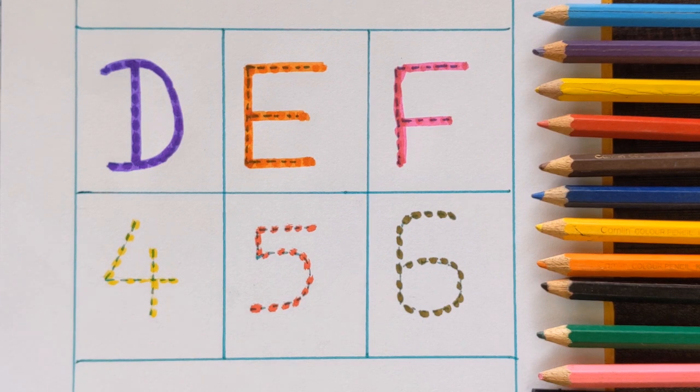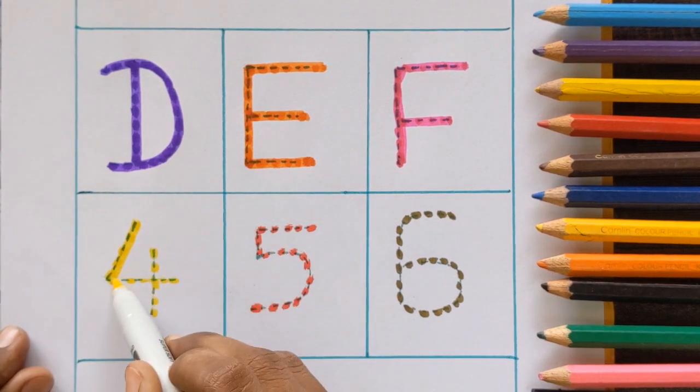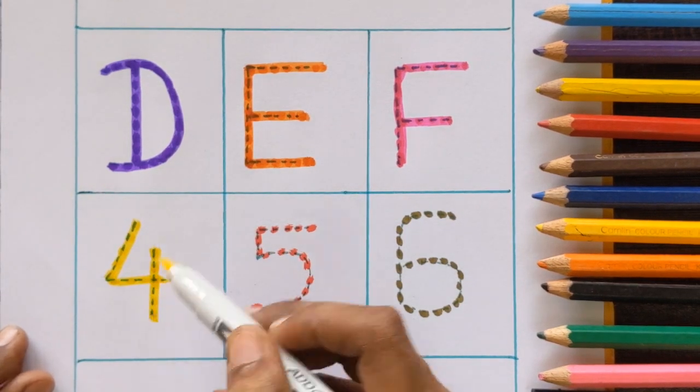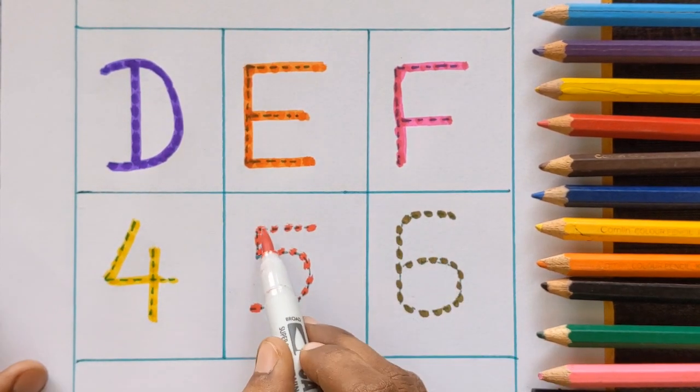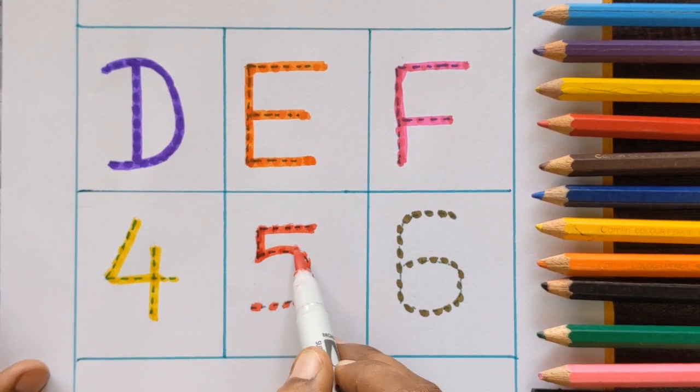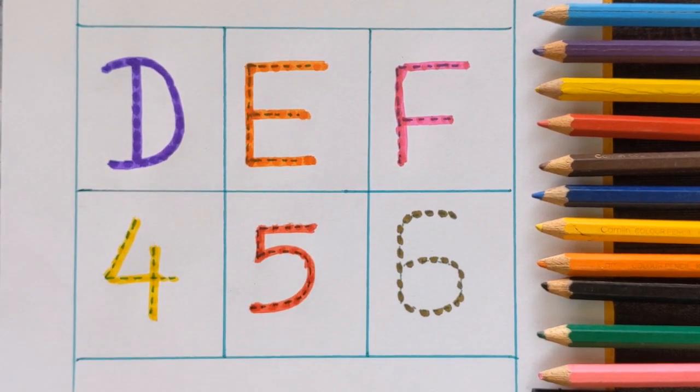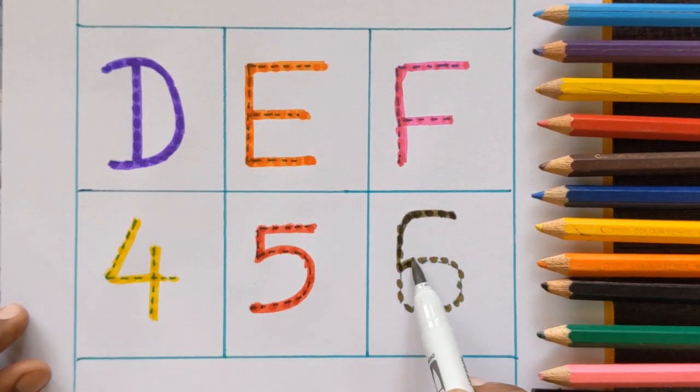Now the numbers. 4, yellow color. After 4, which number is this? 5, red color and 6, olive green color.